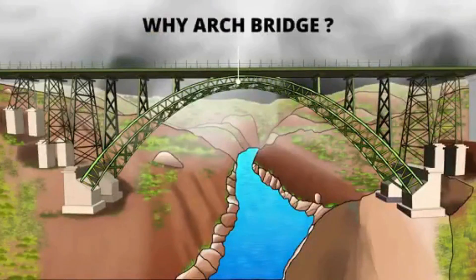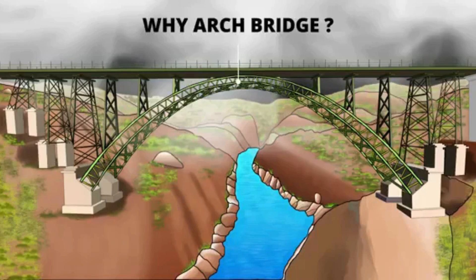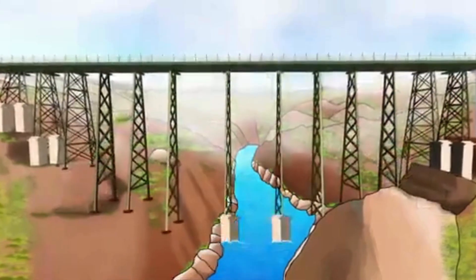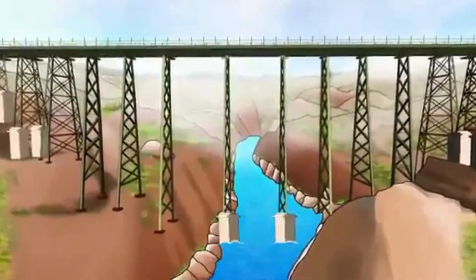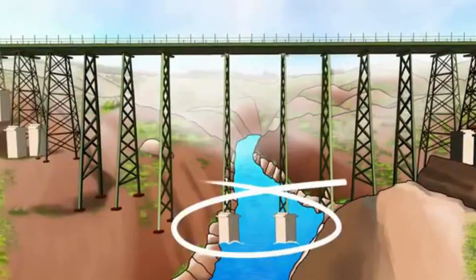You might have wondered why Chenab Bridge uses the arch bridge technology. Why not a simple pillar bridge? Look at the height of the pillars needed in this case. This would also obstruct the river flow below.